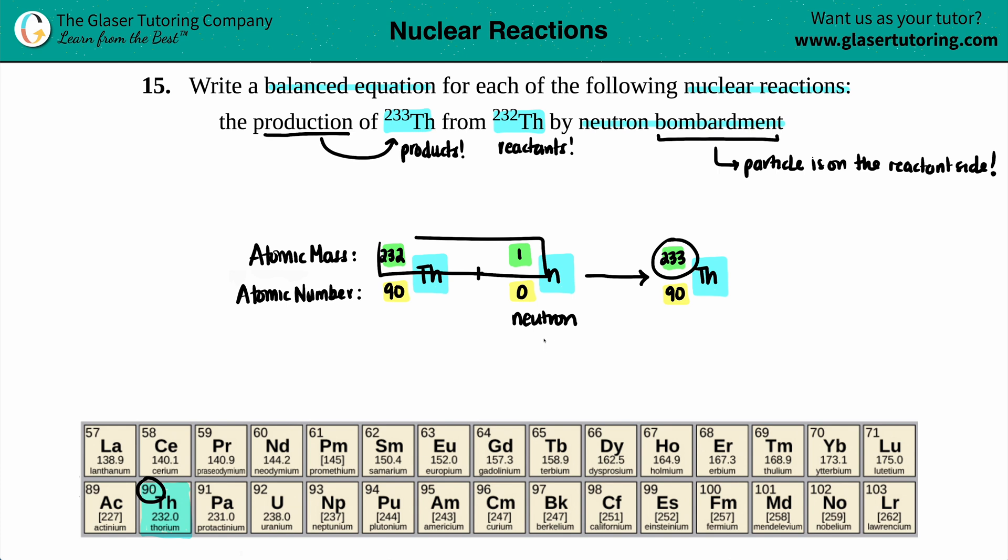But in this case, 232 plus 1 is 233, so that checks out. And 90 plus 0 is 90, so we're good. This is the actual balanced equation.